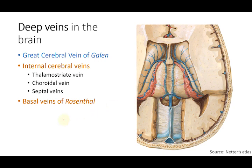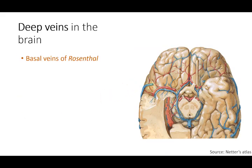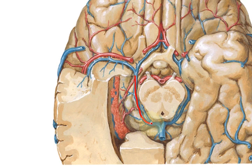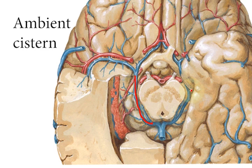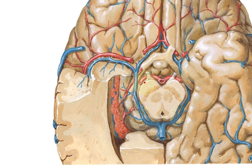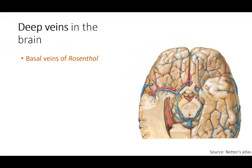Now let us look at the basal vein of Rosenthal from the basal aspect of the brain. It flanks both sides of the midbrain, coursing through the ambient cistern along with the posterior cerebral artery. It then joins with the internal cerebral vein to drain into the great cerebral vein of Galen.